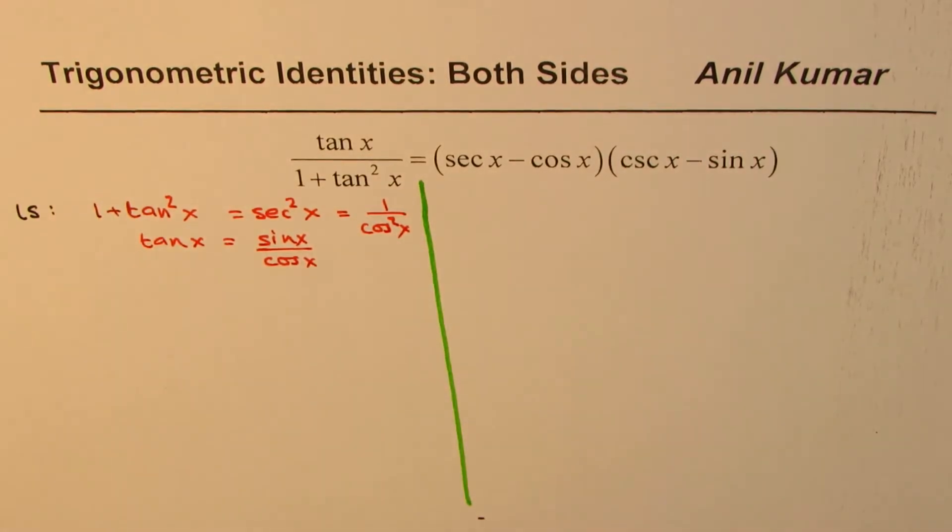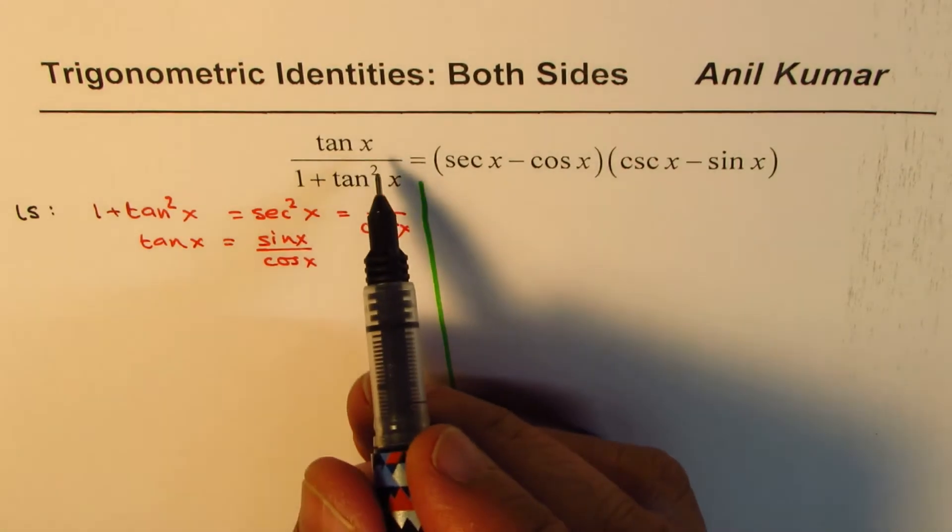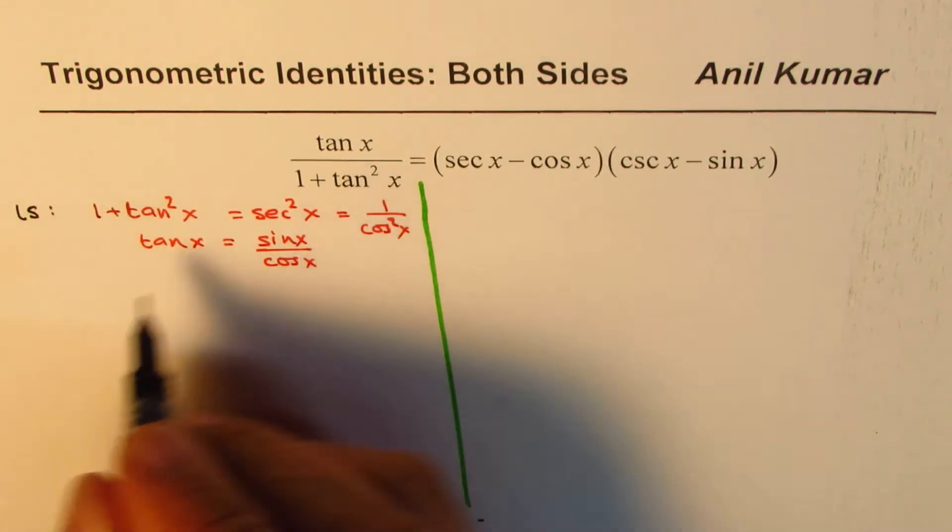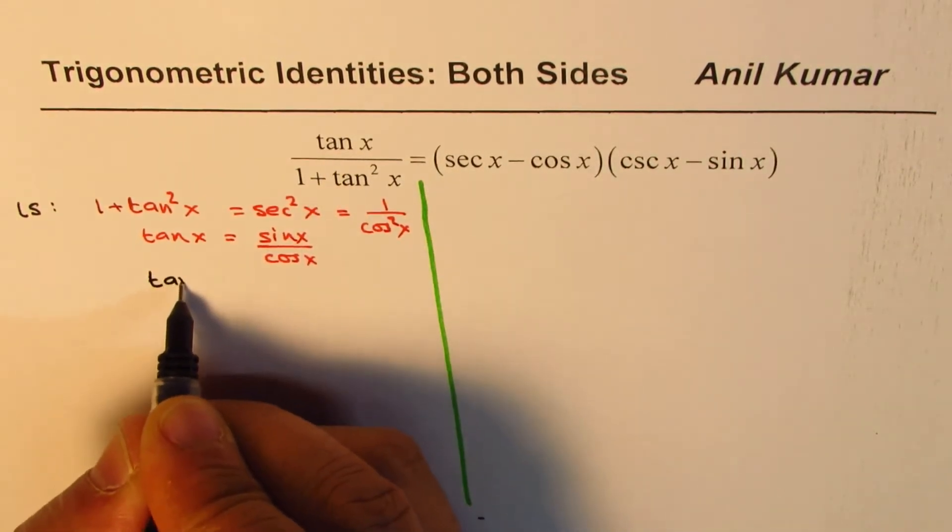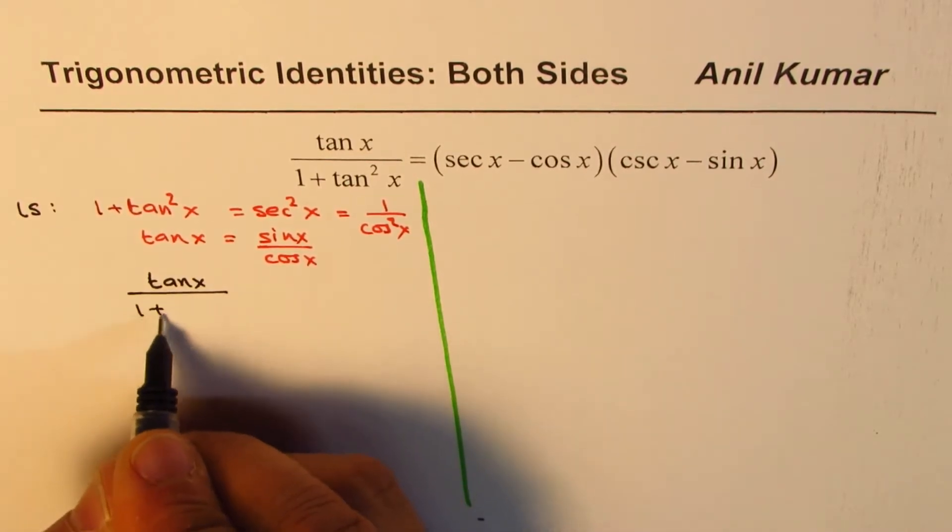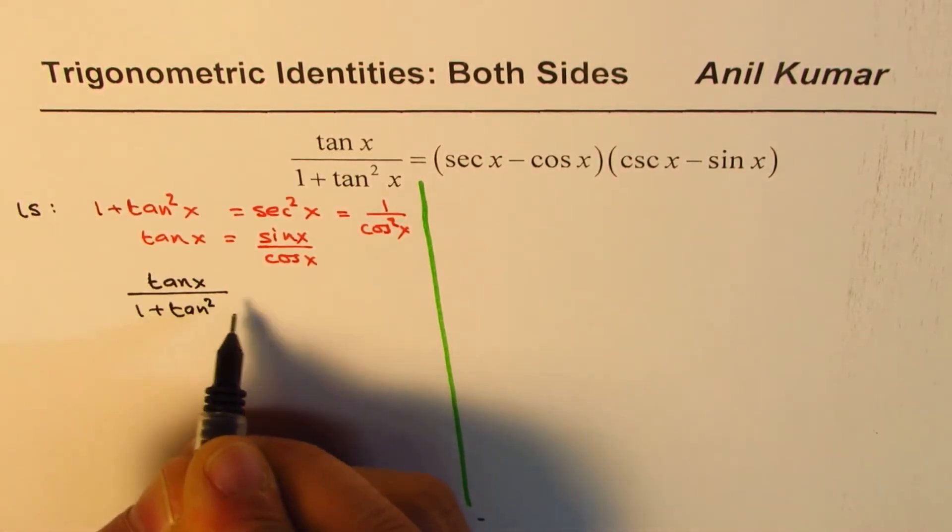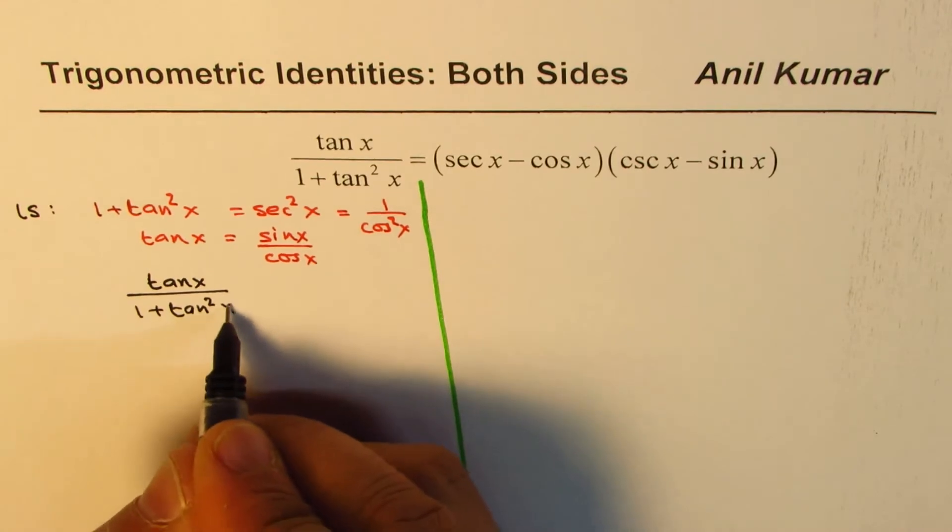So the left side is given to us as tan x over 1 plus tan square x. I'm rewriting since I've added so many things in between.